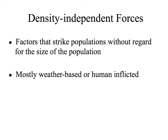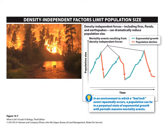Predation risk also goes up because it's easier for a predator to catch prey if they are densely packed together. Density-independent forces are ones that strike populations without regard to the size of the population — generally weather-based or human-inflicted disasters, such as fires, storms, floods, or humans destroying a habitat. Density-independent factors limit population size by drastically decreasing the population very rapidly, then allowing the population to recover over time. Some of these factors occur on a regular basis, with certain ecosystems experiencing floods or fires at fairly regular intervals.